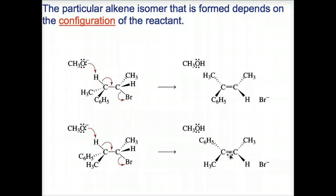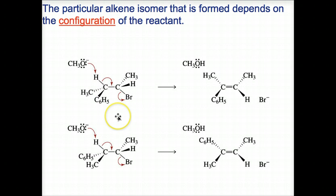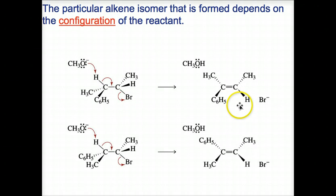On this slide, two E2 reactions are given as examples of the statement at the top: the particular alkene isomer that is formed depends on the configuration of the reactant. These two E2 reactions begin with the methoxide ion taking a proton and the loss of bromine at the same time. In the first reaction, we have anti-elimination of HBr from 2S,3S-2-bromo-3-phenylbutane, which forms the E isomer, analogous to the trans isomer.